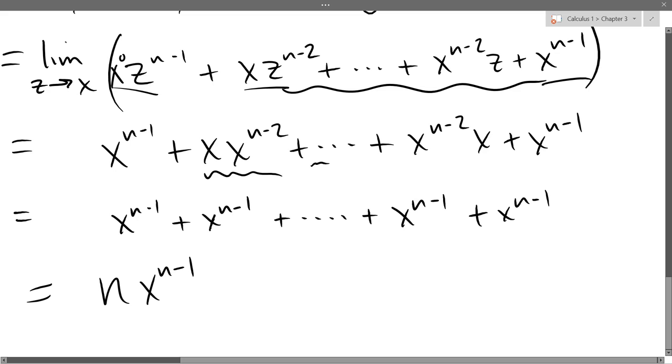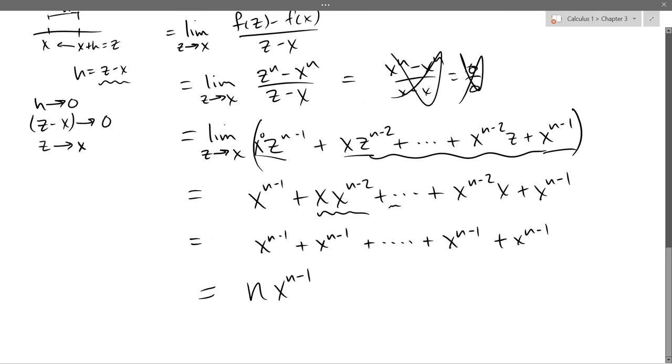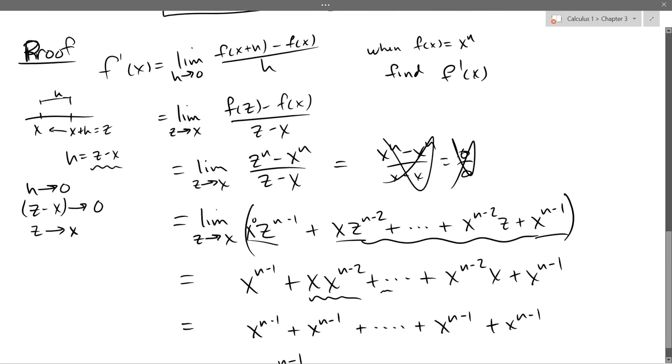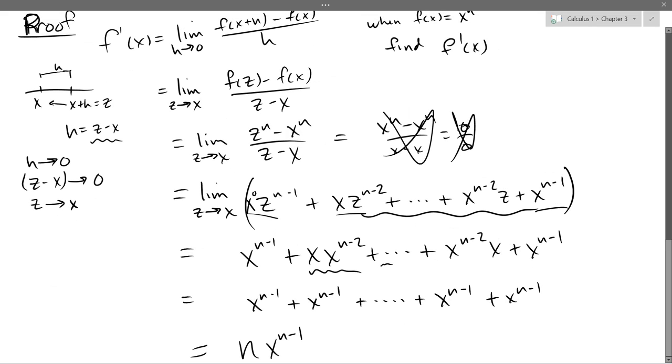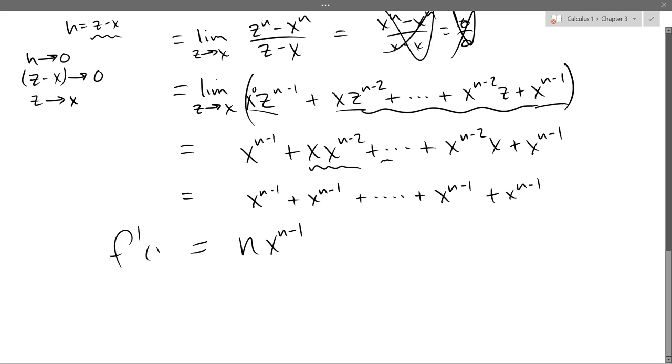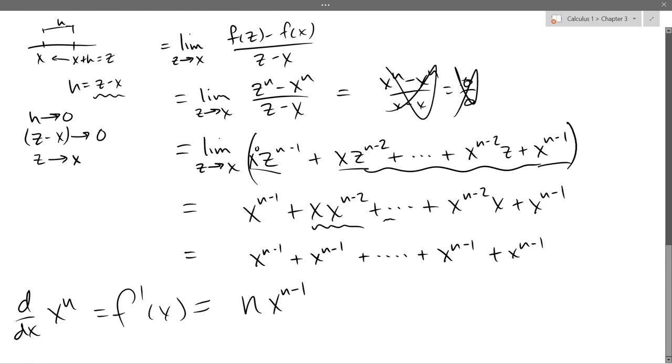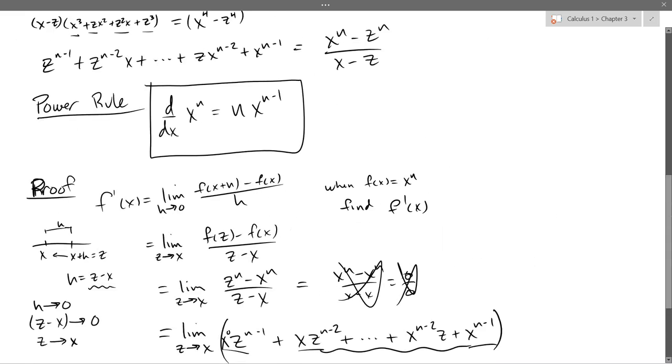And that is our derivative right there. And we started out up here with f prime of x. Which we could, of course, write as d/dx of x to the n. So that's a derivative of the x to the n function. Alright, that's our power rule right there. So we call that the power rule.